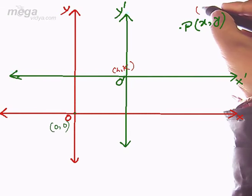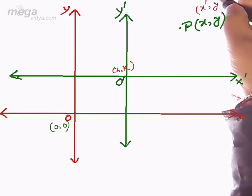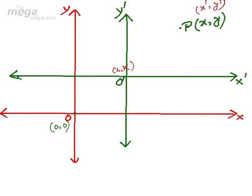With respect to the new axes, the coordinate of the same point P becomes X-dash comma Y-dash. So what will be the relation between X-dash, Y-dash and X, Y? What will be the new coordinate of the same point with respect to the X-dash axis and Y-dash axis? For this purpose we will draw the perpendicular from the point.